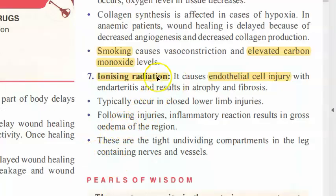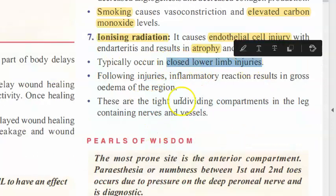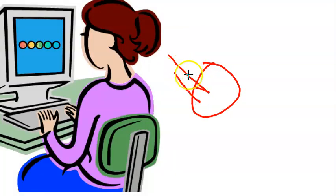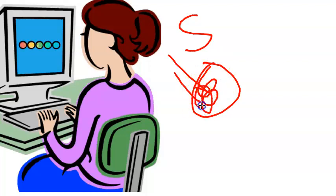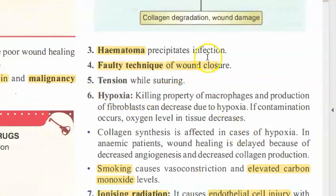Exposure to ionizing radiation can cause endothelial cell injury, atrophy, and fibrosis. To summarize local factors: poor blood supply, smoking causing vasoconstriction and hypoxia, local infection, faulty suturing technique, tension during suturing, radiation exposure, and hematoma formation.